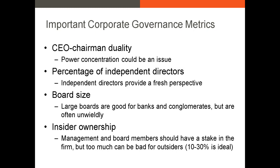Next we want to talk about corporate governance, which you certainly talked about in Finance 300. It really just refers to how the management and the board are being overseen. We like good, strong, healthy corporate governance, and there are a lot of metrics that indicate this. One of the most common is an indicator for whether the CEO is also the chairman of the board — when that happens, we call it CEO-chairman duality. The reason we care about this is because historically, a lot of research has tended to demonstrate that firms with a large concentration of power in one individual tend to underperform because there's not as much effective oversight in most time periods.